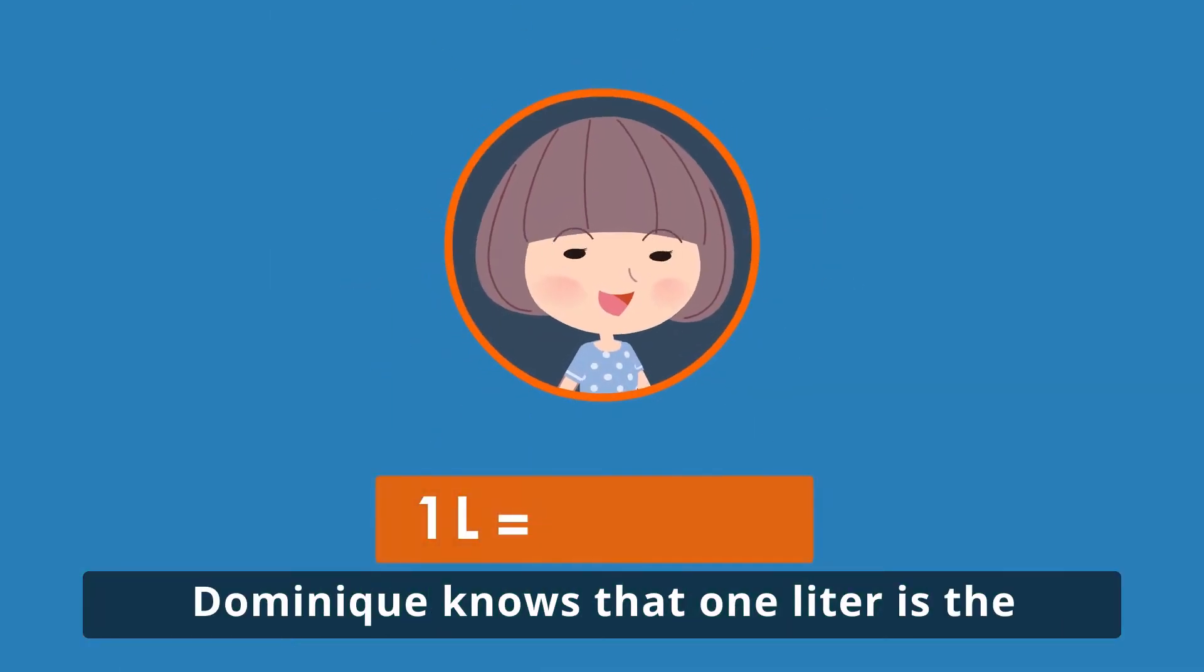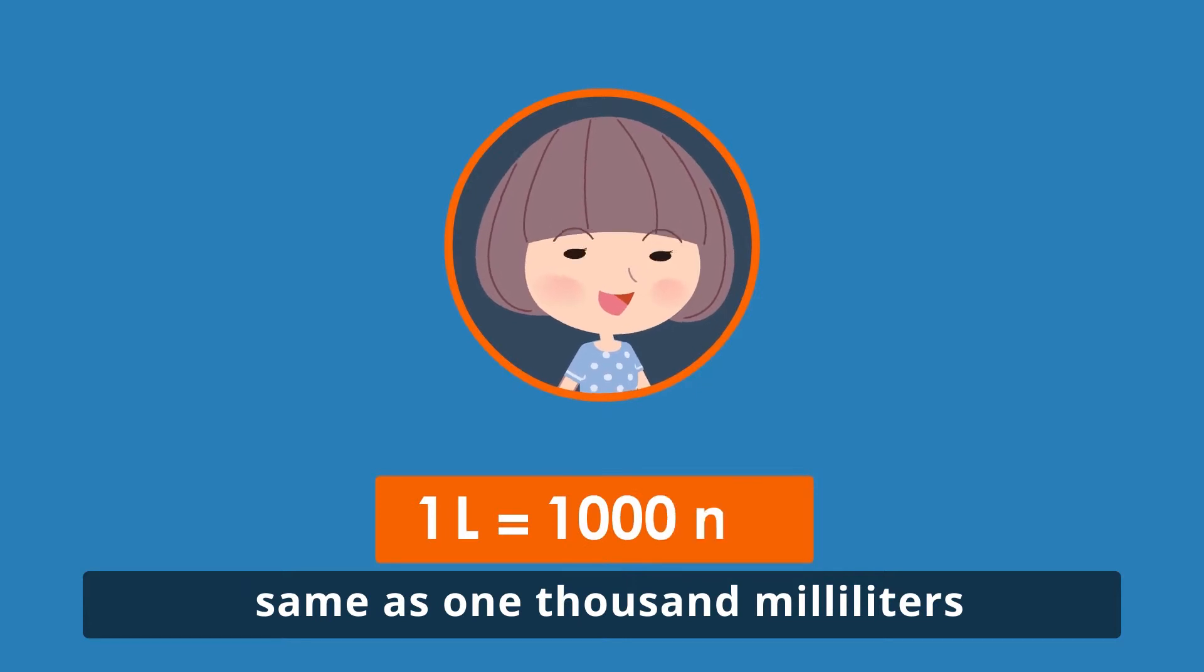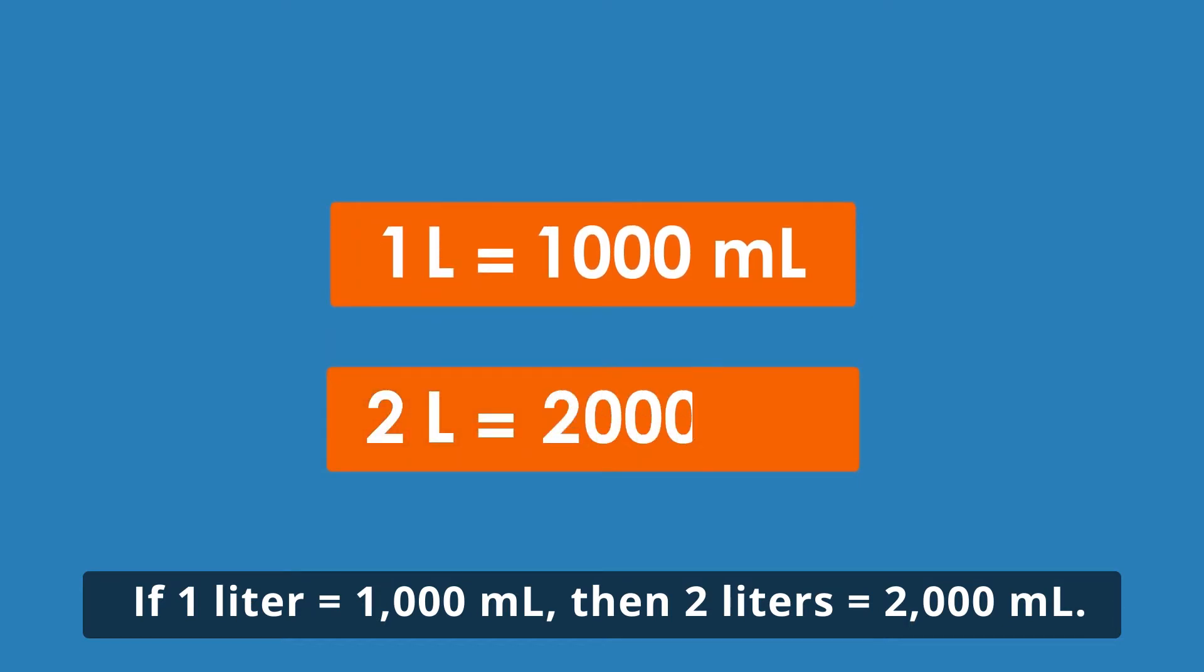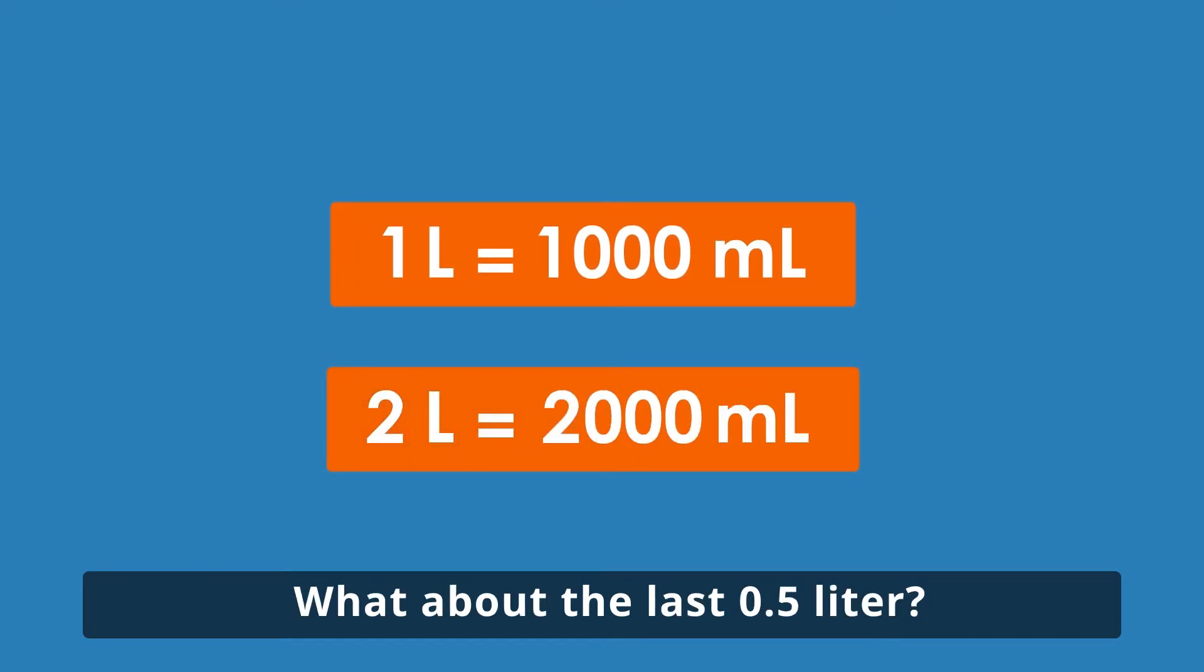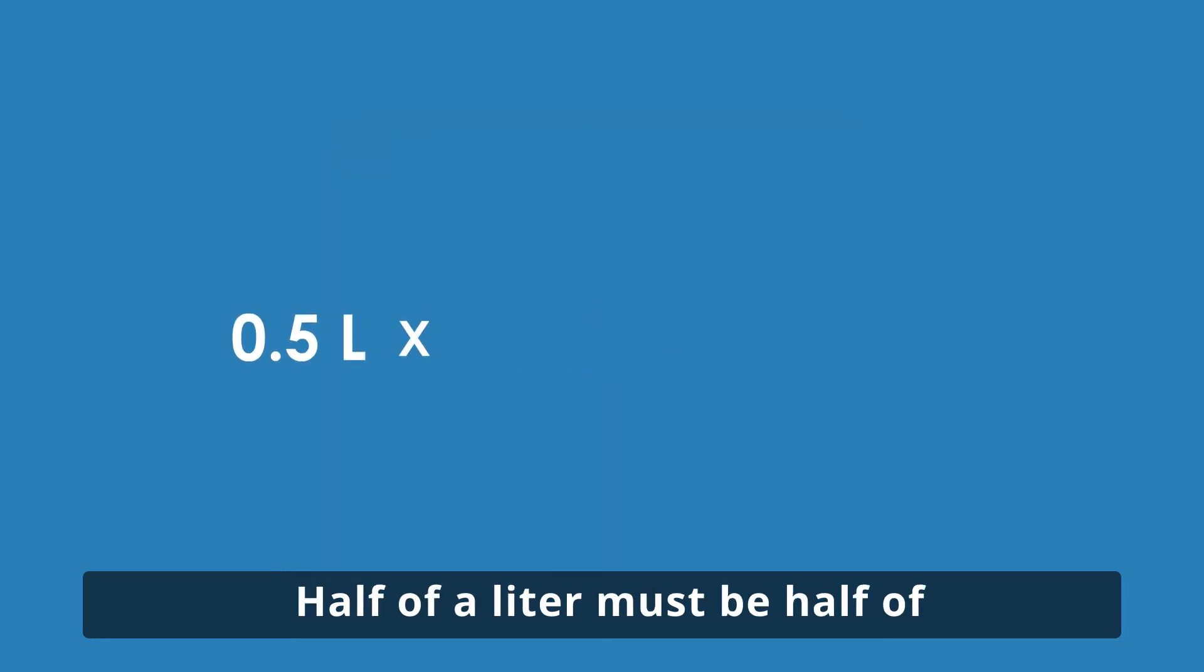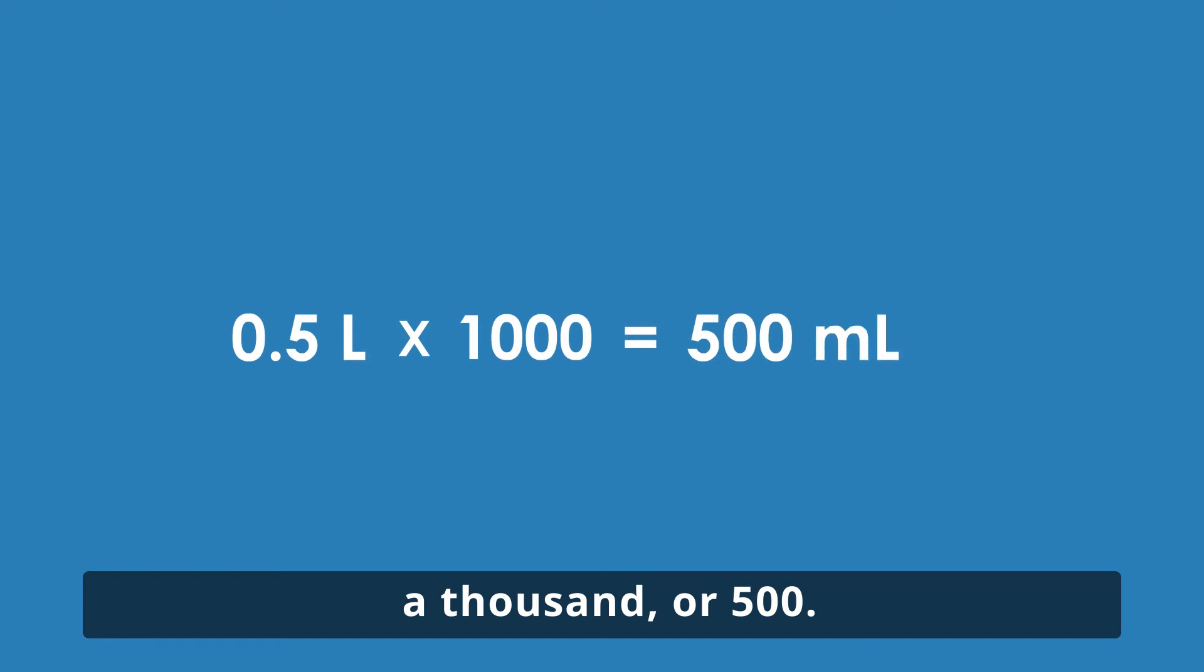Dominique knows that 1 liter is the same as 1,000 milliliters. If 1 liter equals 1,000 milliliters, then 2 liters equals 2,000 milliliters. What about the last half liter? Half of a liter must be half of 1,000 or 500.